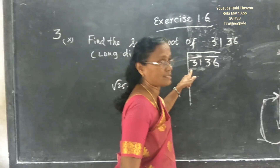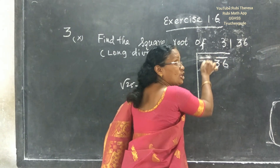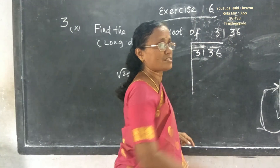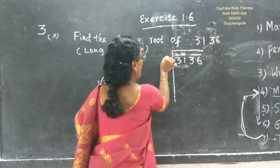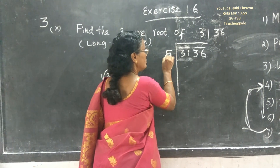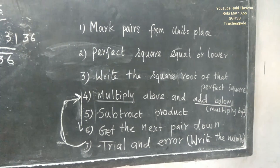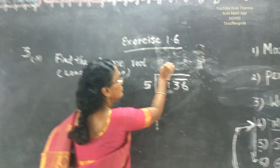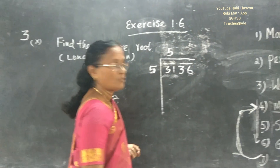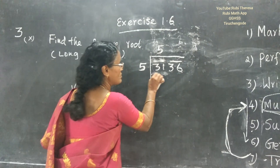First, mark the digits into pairs. For the first pair, find the perfect square number nearest to it, then find the square root — the number is 5. Write the number 5 above. Next, multiply above: write 5 above and multiply — 5 times 5 equals 25.